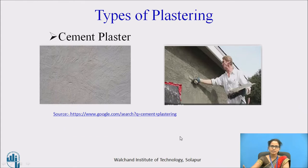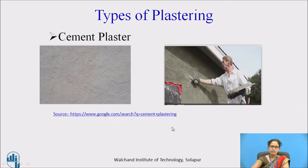For cement plaster, cement is used as a binding material. It is applied in a single coat, and the thickness of this coat should not exceed 12 mm, 15 mm, and 20 mm. If the thickness of the plaster exceeds 15 mm, you go for a cement plaster thickness of 6 mm, and the cement mortar proportion should be 1:3 or 1:4 depending upon the plastering and the surface where it has to be done.